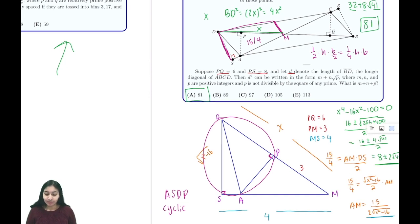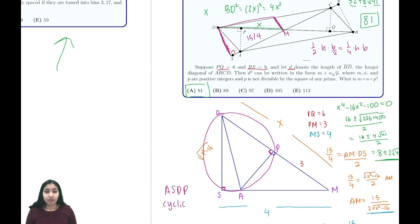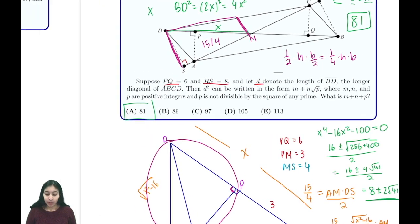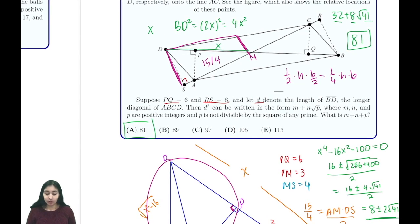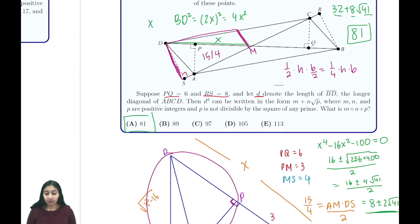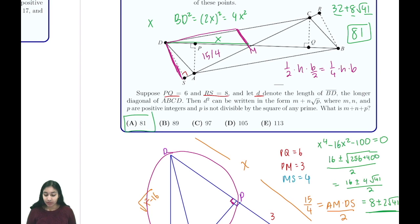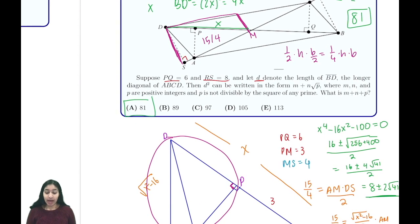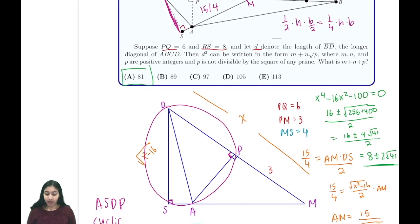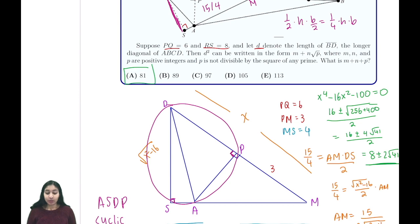This problem is definitely complicated with a lot going on, so let me quickly summarize what we did. From facts about parallelograms, we knew PM was half of PQ, which is 3, and MS is half of RS, which is 4. We let diagonal DM be x and expressed DS in terms of that. Then we found the side AM in two different ways using the fact that area of AMD is one-fourth the area of the parallelogram, and we also used power of a point, which required creative thinking since we had to recognize the cyclic quadrilateral.